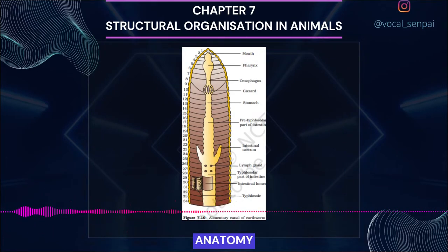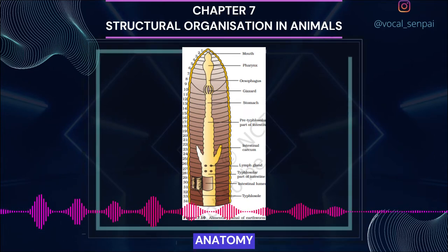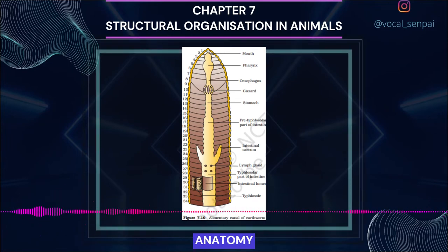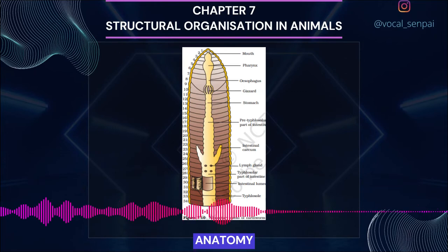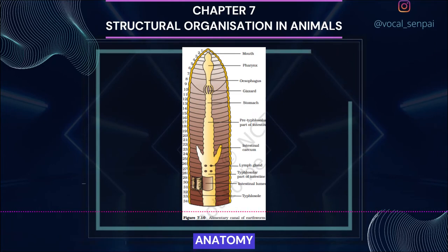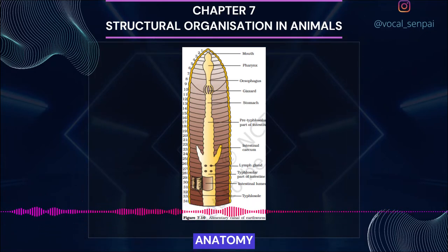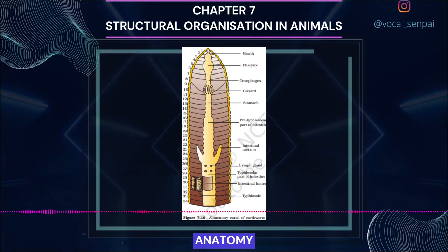Anatomy. The body wall of the earthworm is covered externally by a thin non-cellular cuticle, below which is the epidermis, two muscle layers (circular and longitudinal), and an innermost coelomic epithelium. The epidermis is made up of a single layer of columnar epithelial cells containing secretory gland cells. The alimentary canal is a straight tube running from the first to the last segment of the body (figure 7.10). A terminal mouth opens into the buccal cavity (segments 1–3), leading into a muscular pharynx. A small narrow tube, the oesophagus (segments 5–7), continues into a muscular gizzard (segments 8–9) which helps in grinding soil particles and decaying leaves. The stomach extends from segments 9 to 14. The food of the earthworm is decaying leaves and organic matter mixed with soil. Calciferous glands present in the stomach neutralize the humic acid present in humus.